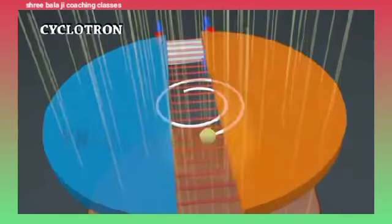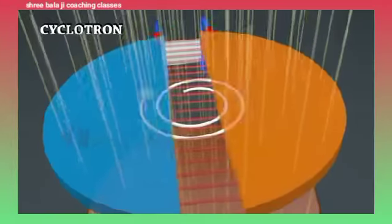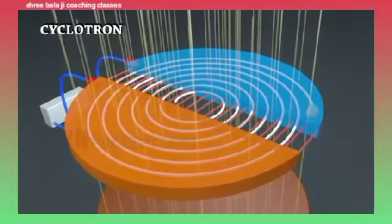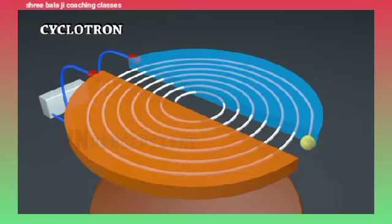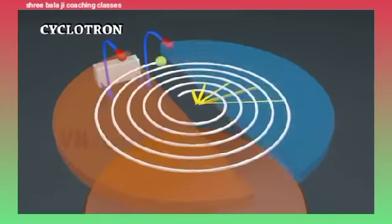In this way, the particle moves in a circular path and with each circle, the velocity of the charged particle increases. If the velocity of a charged particle increases, the radius of the charged particle would also increase.